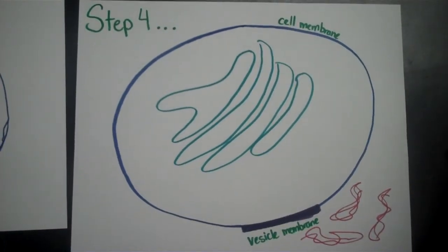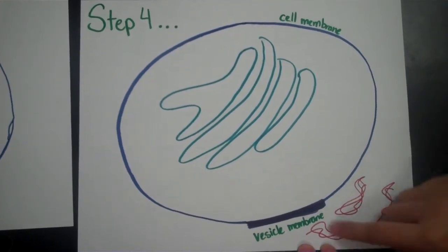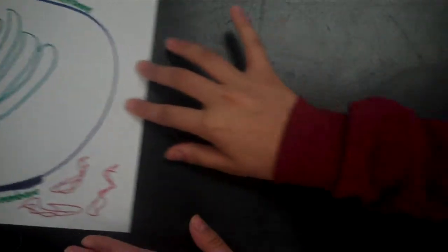Step 4: The vesicle membrane stays as part of the cell membrane, and now the macromolecules are outside of the cell.